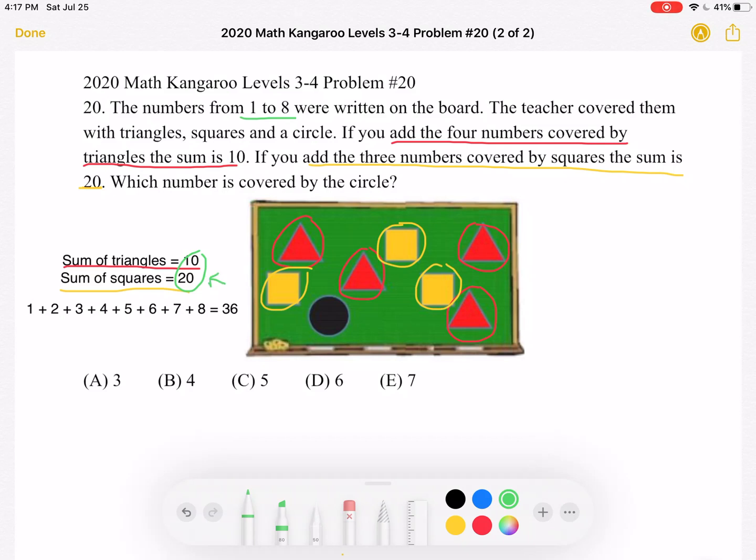So again, we know that the sum of the 7 shapes that I've circled written on the board must be 30. And the total sum of all the numbers written on the board, including the one covered by the circle, must be 1 to 8. So it'll be 1 plus 2 plus 3 plus 4 plus 5 plus 6 plus 7 plus 8.